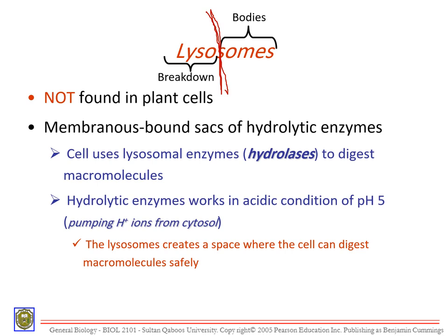Lysosomes are not found in plant cells — stay curious and find out why. Lysosomes are membranous-bound sacs of hydrolytic enzymes — literally a bag full of hydrolytic enzymes, enzymes that break down things. The cell uses lysosomal enzymes called hydrolases — anything that ends with '-ase' is an enzyme. These are used to digest macromolecules. Hydrolytic enzymes work in acidic conditions with a pH of 5 by pumping hydrogen ions from the cytosol.